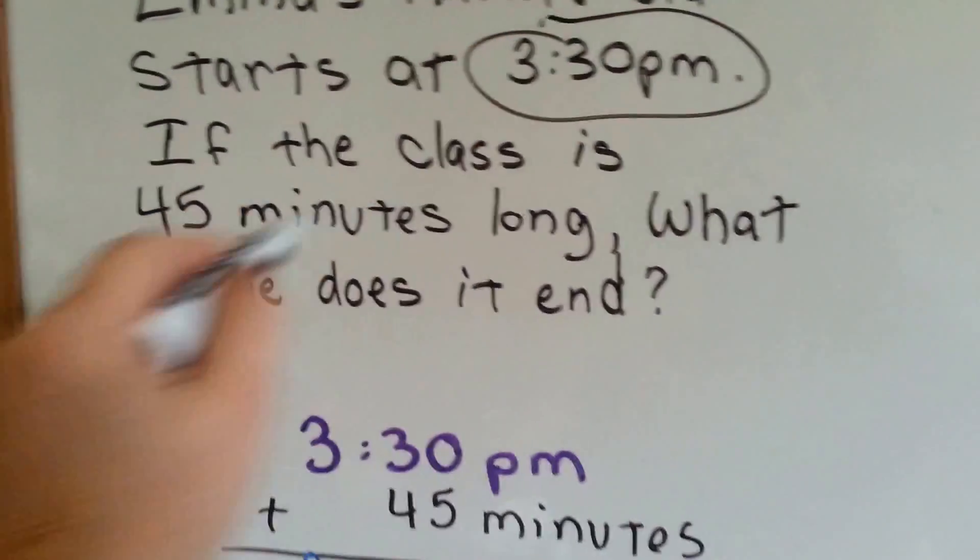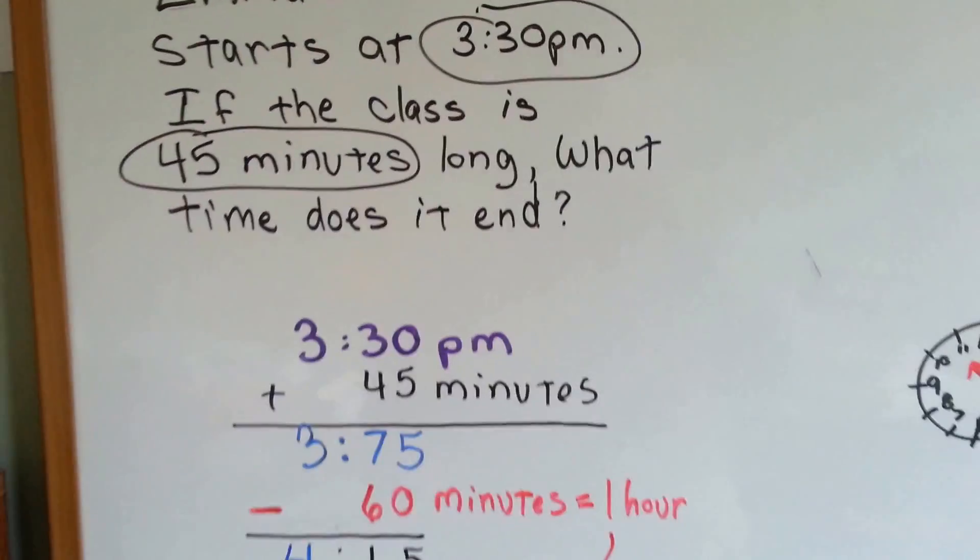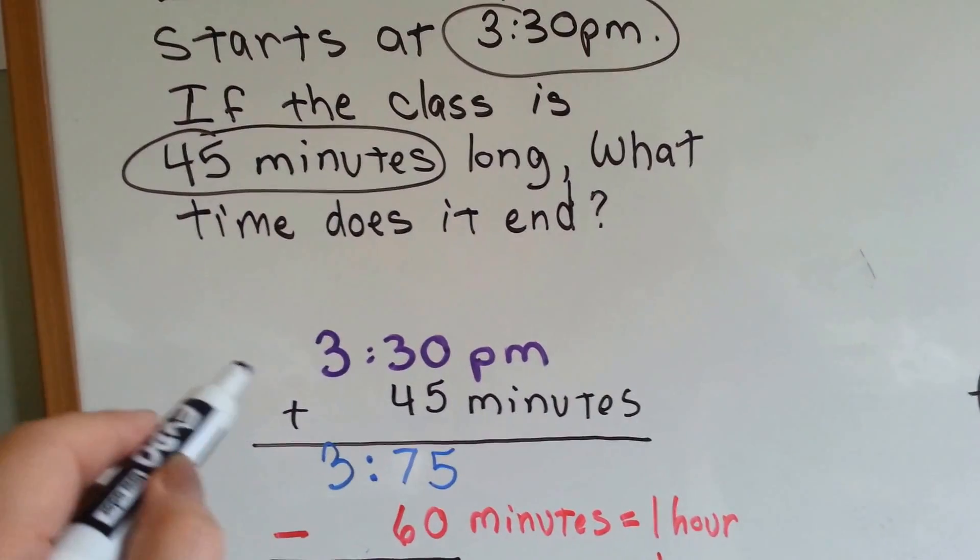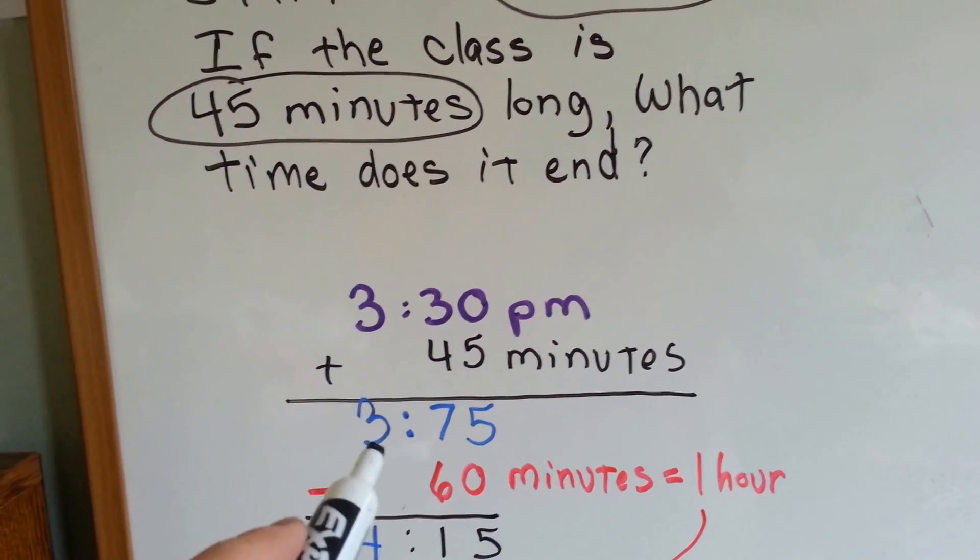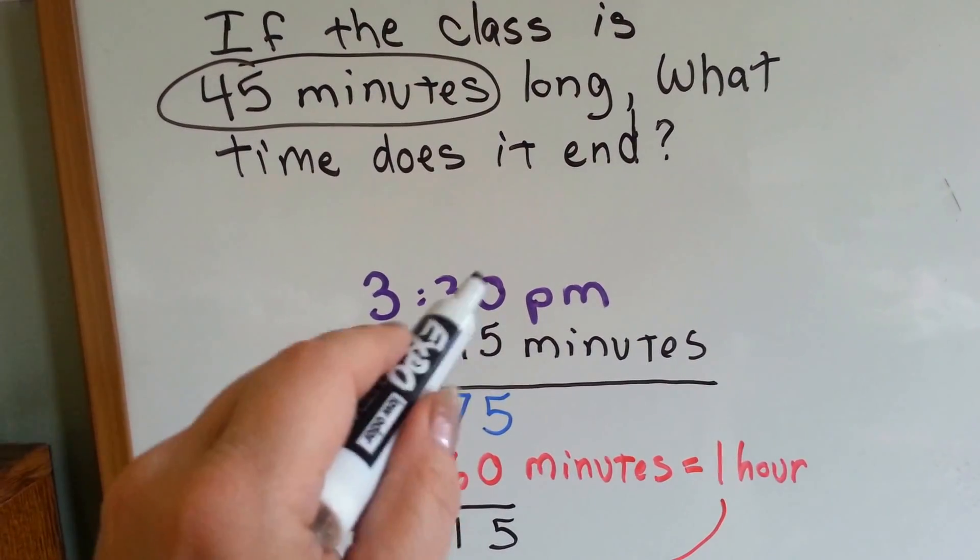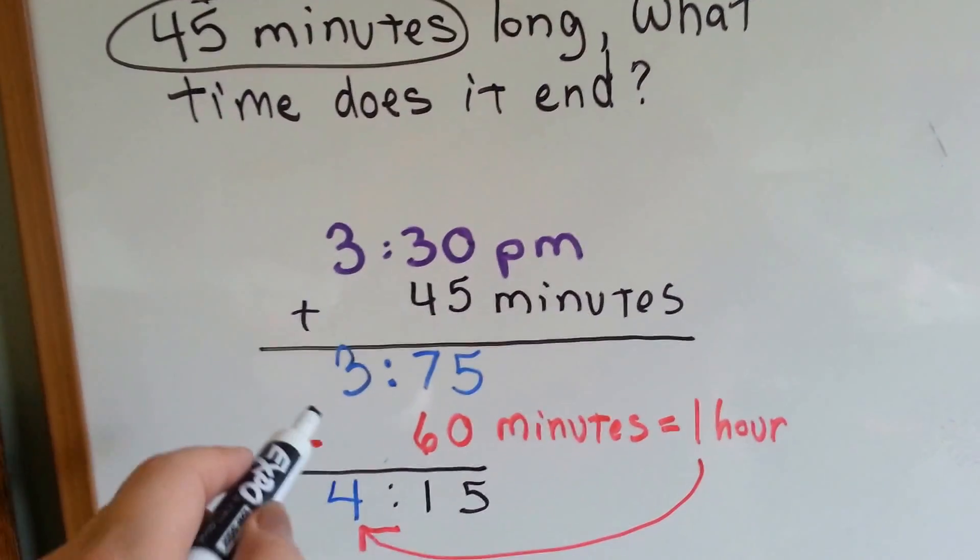We're going to add 3:30 PM to the 45 minutes. 5 and 0 is 5, 3 and 4 is 7, and we drop down the 3.